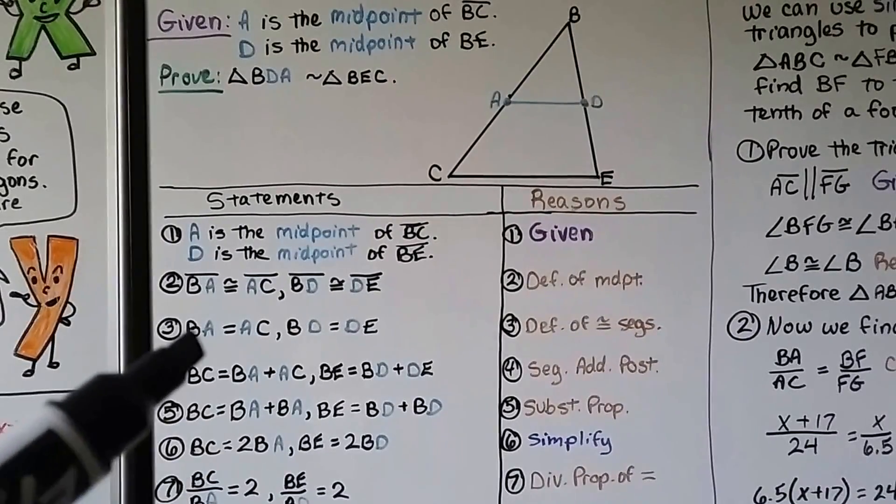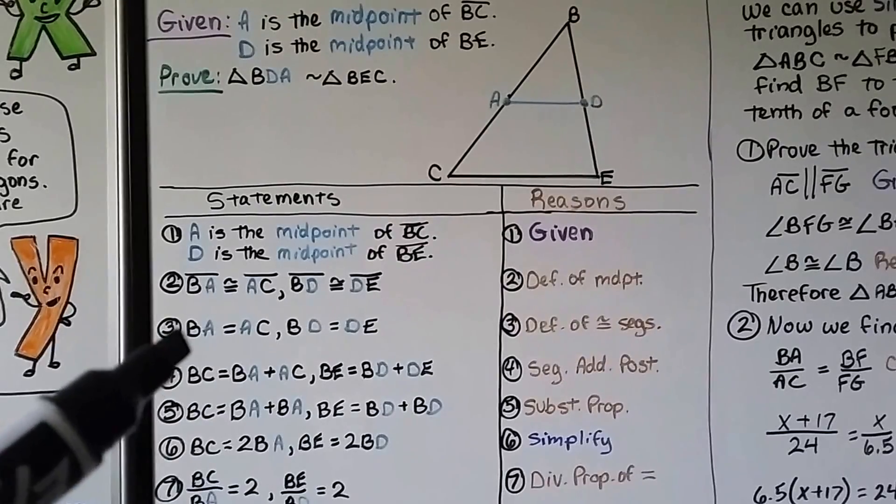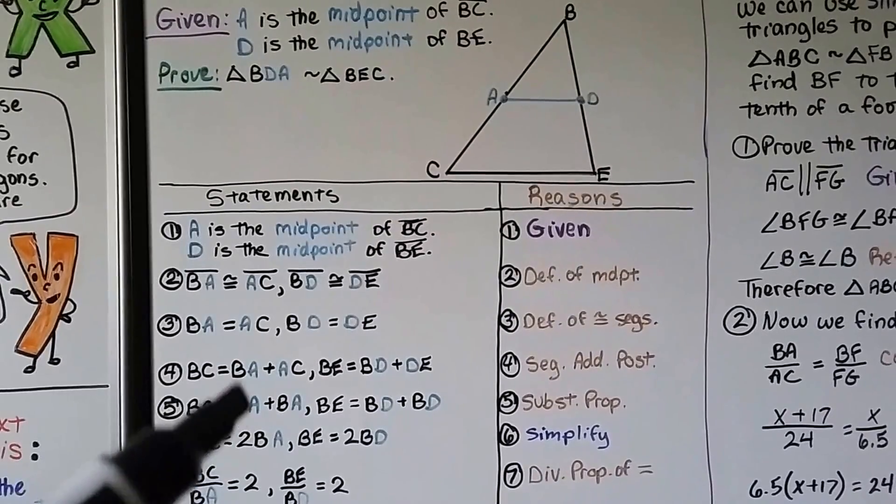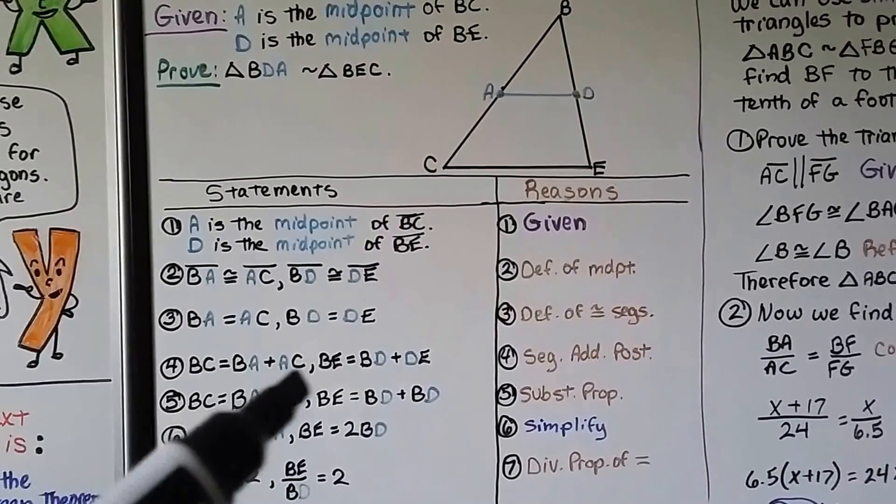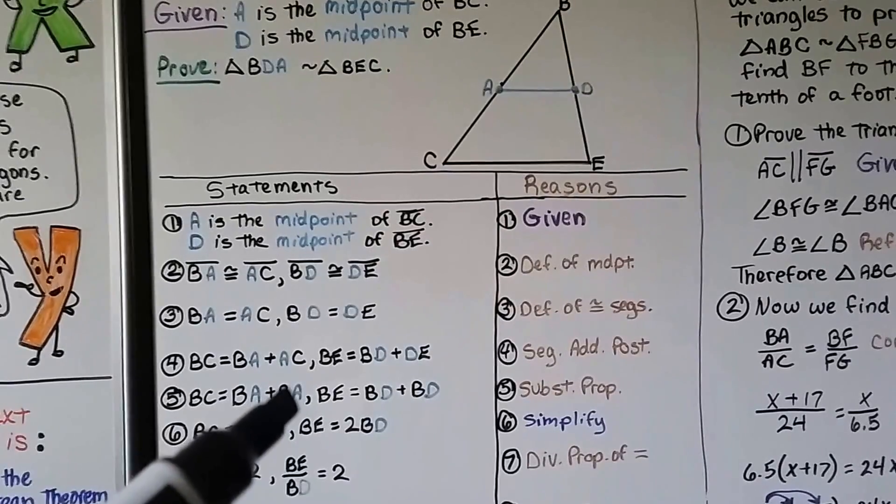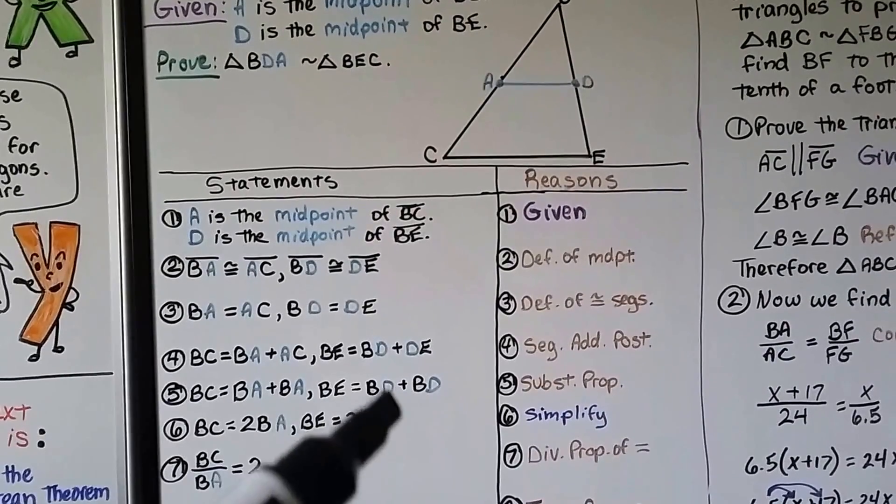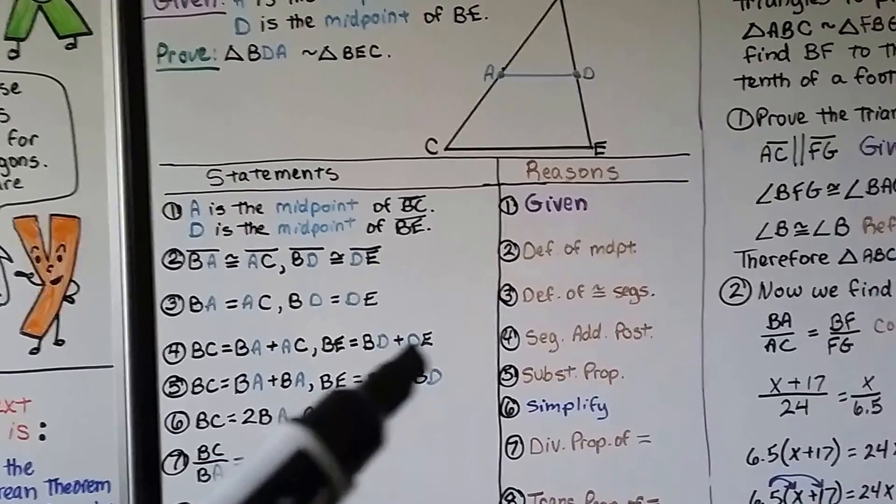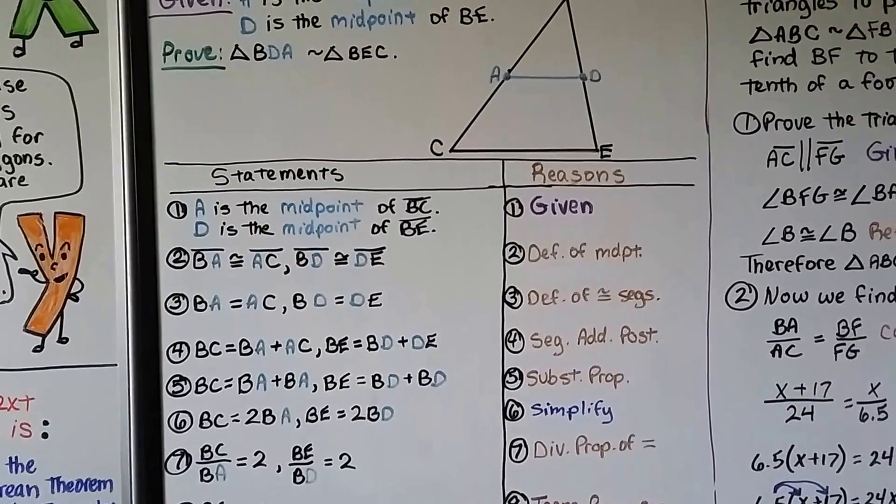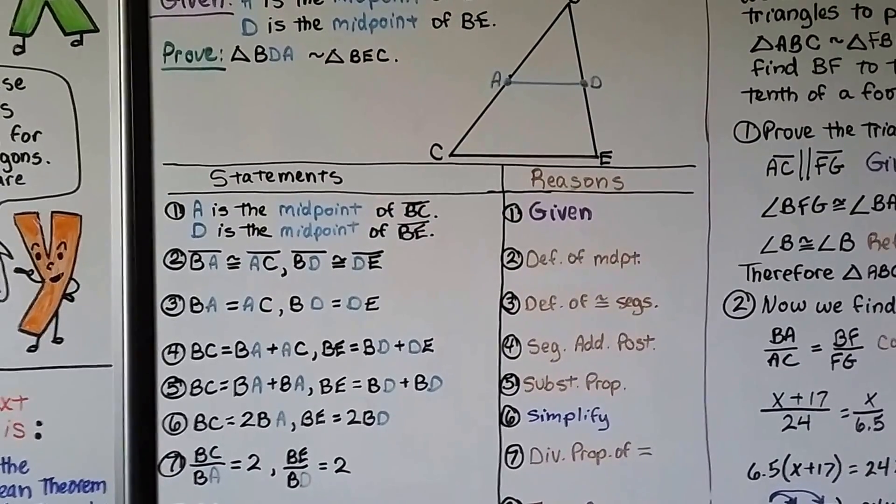Number five, we saw and had up here at number three that BA is equal to AC, so if we're adding those two together and they're equal to each other, we can just say BA plus BA. And for BE, we could just say BD plus BD, because these are equal to each other. That's the substitution property.